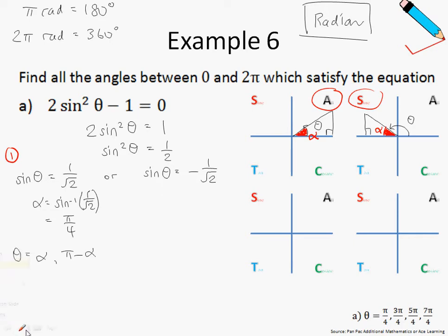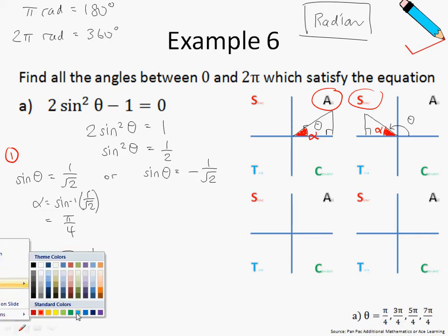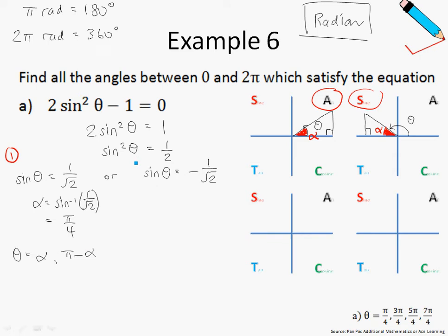So much for the first scenario. Let us move on to explore the second scenario. So this is scenario number 2, where sin θ is a negative 1/√2. So recall that for sin θ to be negative, we have to be either in the tangent quadrant or in the cosine quadrant. So this explains the other scenario over here.